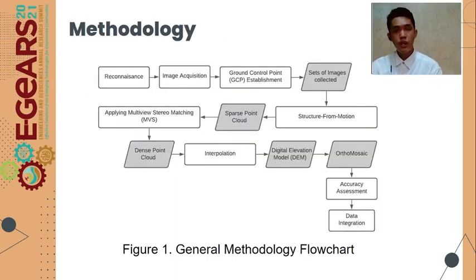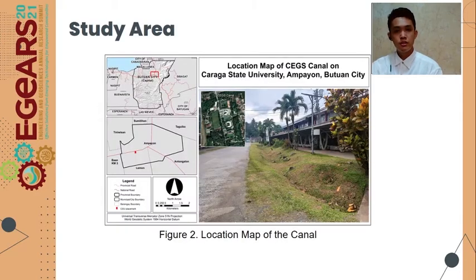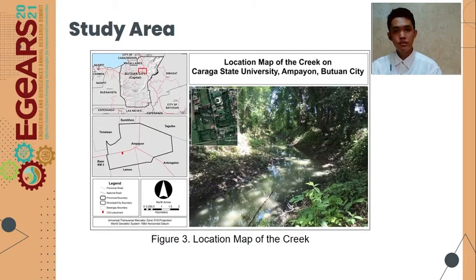I am Jerry Carpio, and I'm going to discuss the methodology of our study. As shown in Figure 1, the General Methodology Flowchart — the study area was conducted at Caraga State University main campus. It was implemented on two sites: the canal and the creek. The canal has less obstruction and a simple topography, while the creek has several obstructions and a complicated topography.